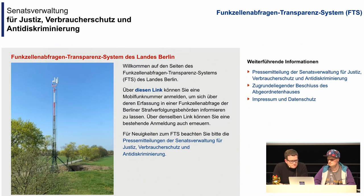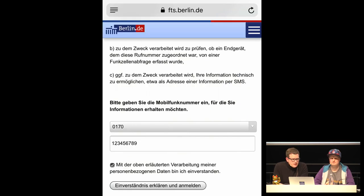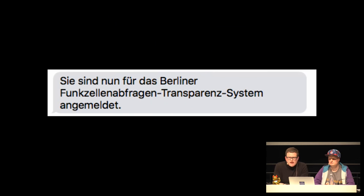In 2018 this went live - the mobile phone cell query transparency system of the state of Berlin. This is the first system across the country that we got running. It's a transparency system - the first attempt in Germany to register mobile phone cell queries and inform affected people. How does it work? You register with the system, enter your phone number, receive a text message with a PIN confirmation code, enter it on the website, and then receive another text message confirming you are registered.